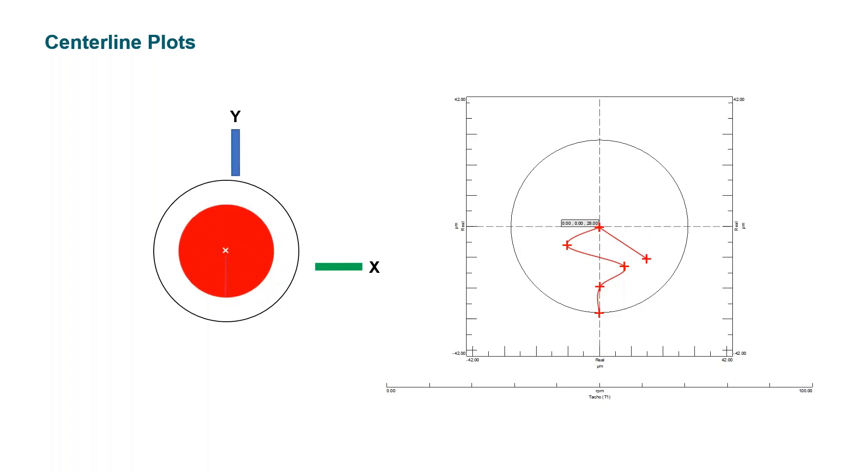So this is how the centerline plot is built. Combination of X and Y-probe average position of the shaft per rotation.